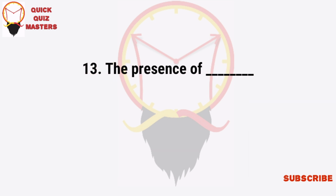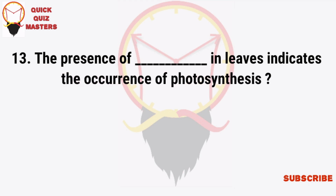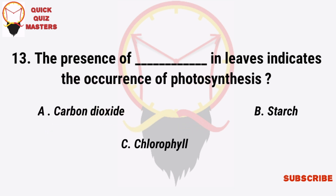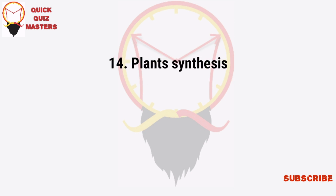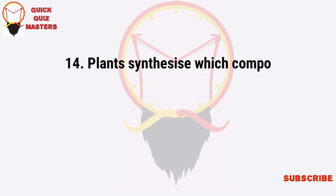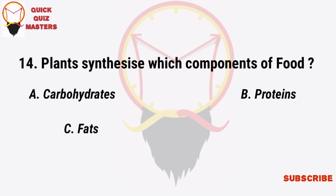The presence of which substance in leaves indicates the occurrence of photosynthesis? Carbon dioxide, starch, chlorophyll, stomata. Plants synthesize which components of food? Carbohydrates, proteins, fats, all of these.